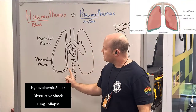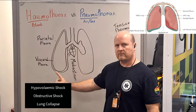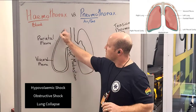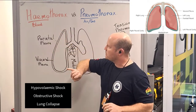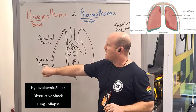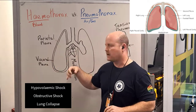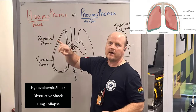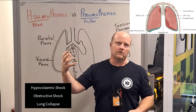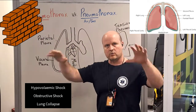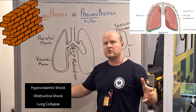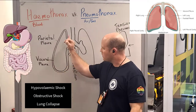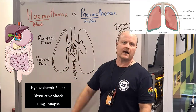Our lungs are surrounded by two layers of gladrap called pleura. The outer layer is called the parietal pleura, and the inner layer, closer to the lung, is the visceral pleura. Parietal means wall, so it's on the outside, closer to the wall of the chest, and visceral means organ, so that's why it's wrapped around the organ of the lung.